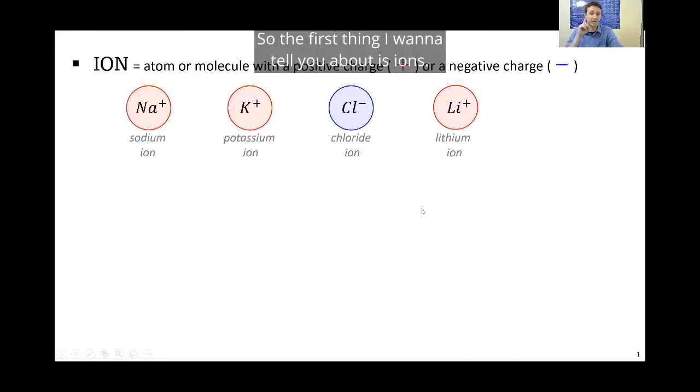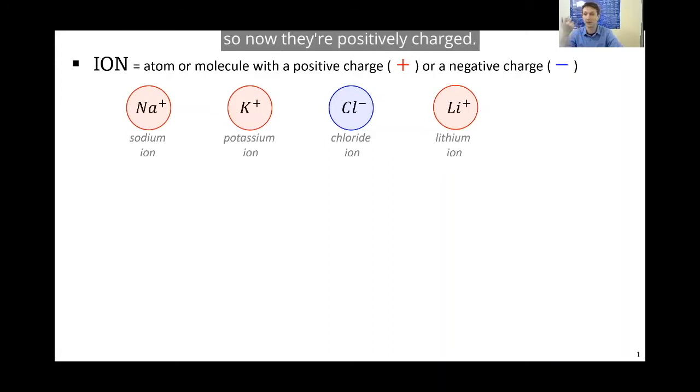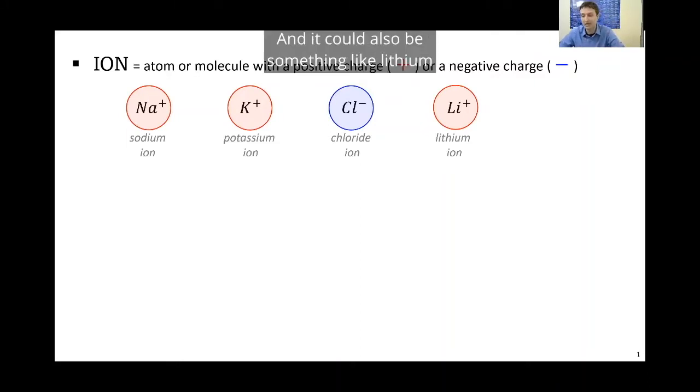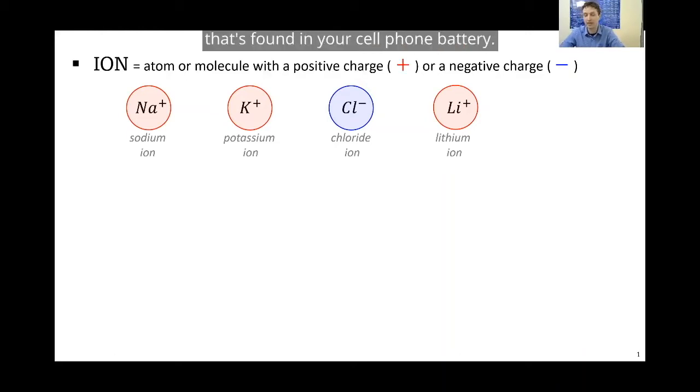So the first thing I want to tell you about is ions. An ion is just an atom or molecule that has a charge. This could be something like sodium and potassium that have lost an electron so now they're positively charged. It could be something like chloride ions that have gained an electron and now have a negative charge. And it could also be something like lithium that's found in your cell phone battery.